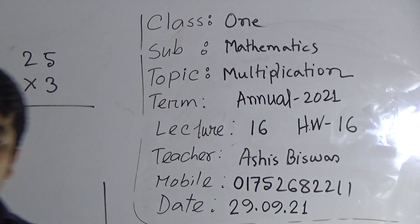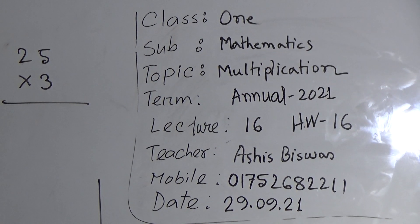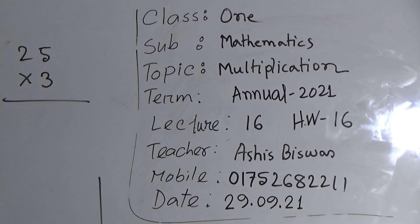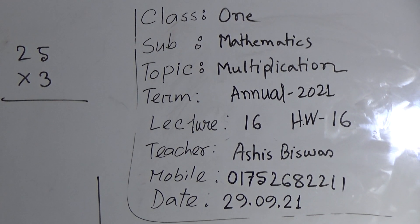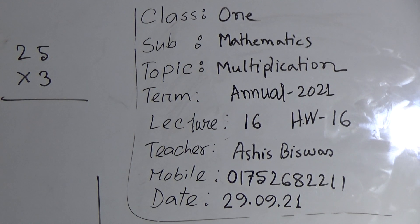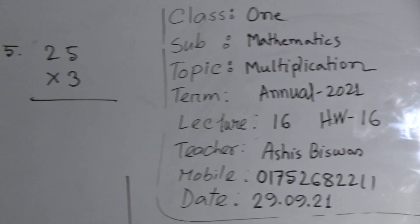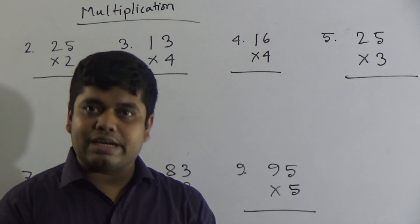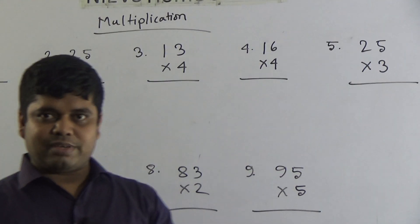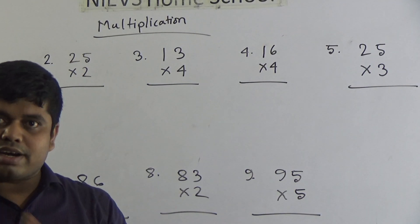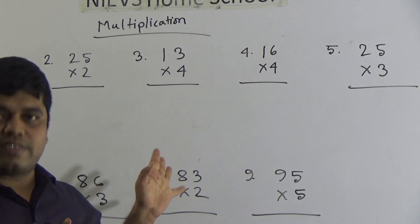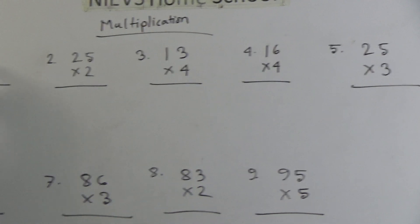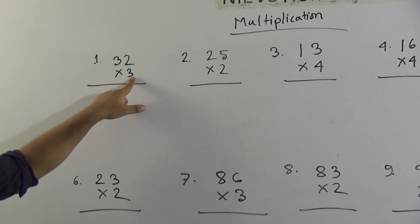Today we shall learn multiplication. In order to learn multiplication, first you need to know the times table from one to nine. My dear student, you must learn the times table from one to nine in order to do well in multiplication. We have already learned what multiplication is in our previous classes. I know you are very smart learners, so it will be easier for you. Let us start our class. Our first question: 32 multiplied by 3.